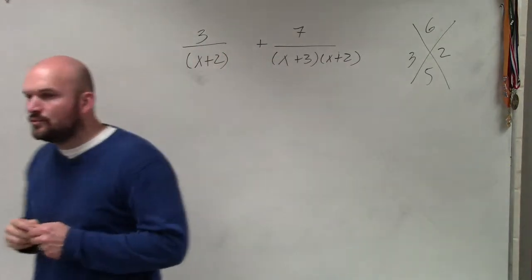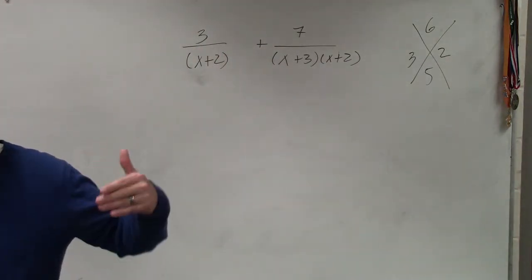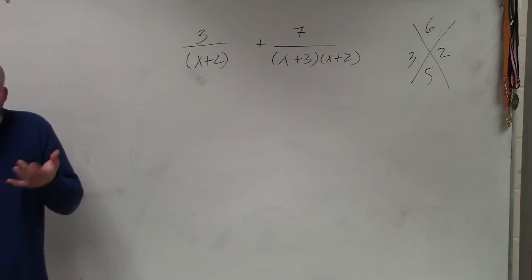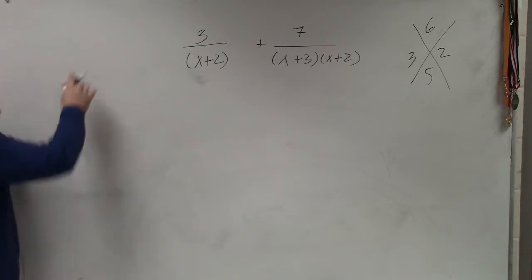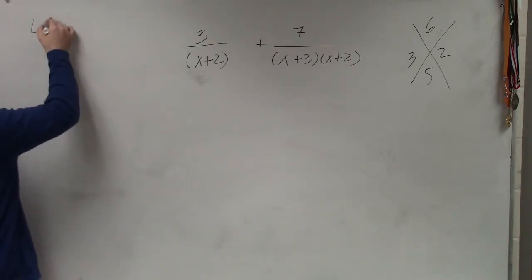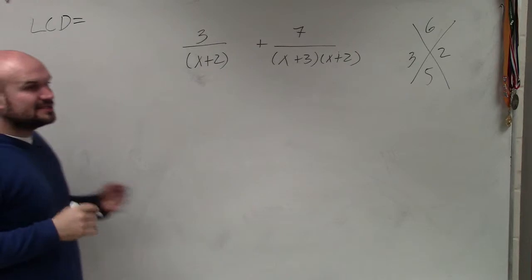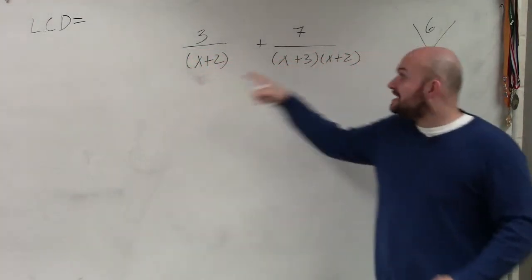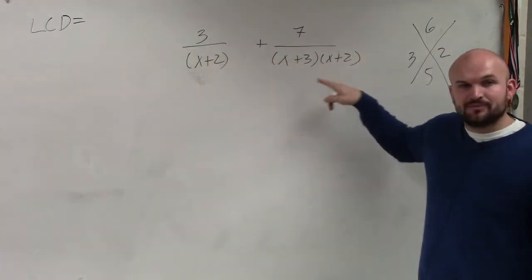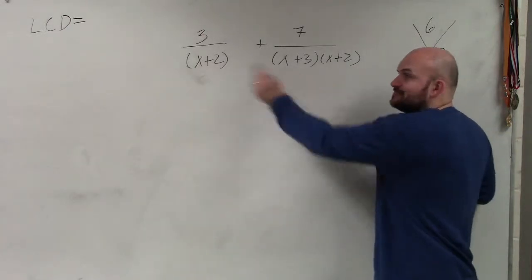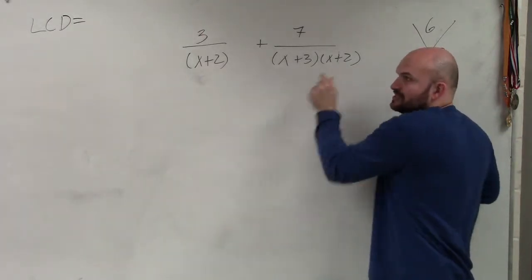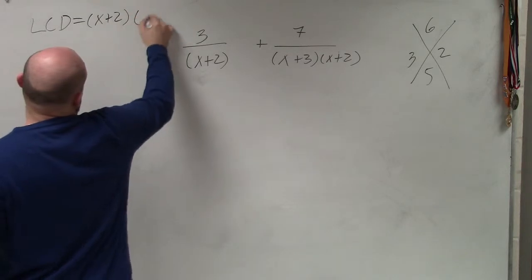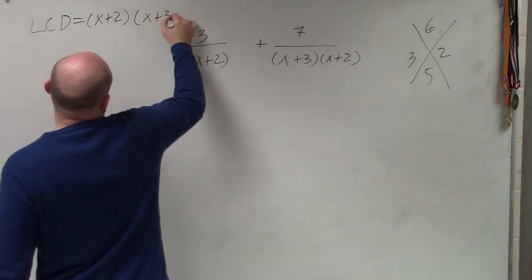Now what that does to help me out is when I'm combining them, I can determine that the LCD is going to have to contain (x + 2) as well as (x + 3). I don't need to multiply these because x + 2 is the same. So the LCD is going to be (x + 2)(x + 3).